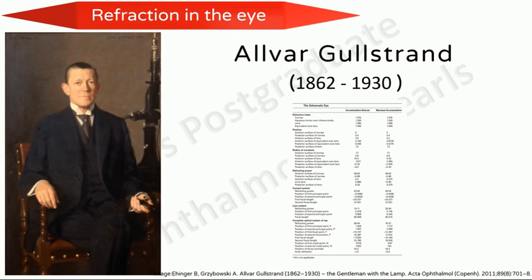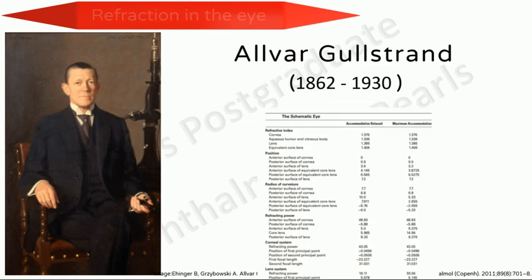Numerous people have devised their own interpretations of the ideal schematic eye, but the detailed schematic eye model developed by Alvar Gullstrand most closely approximates the human eye. Alvar Gullstrand was a Swedish ophthalmologist and was the only ophthalmologist to win the Nobel Prize for his work in ophthalmology. In 1911, Alvar Gullstrand was awarded the Nobel Prize for Physiology or Medicine for his work on the optics of the eye. The schematic eye developed by Gullstrand is very detailed and gives the measurements for the positions and refractive indices of the refractive surfaces of the eye and various cardinal points.